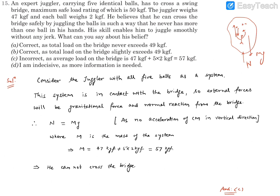Effective mass or on average mass will remain the same, no matter where the balls are in the air or they are all in the hand or whatsoever. The system will have M mass and this mass of the system is going to be 57 kilogram force, which the bridge cannot sustain.